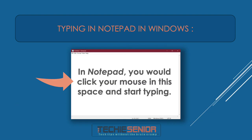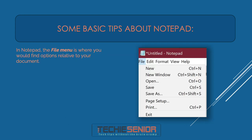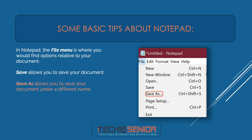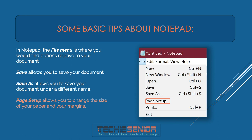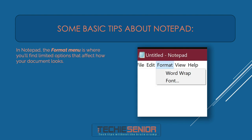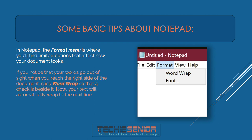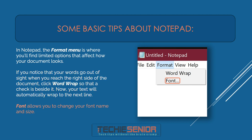In Notepad, click your mouse in the main space and start typing. The File menu is where you find options relative to your document: Save allows you to save your document; Save As allows you to save it under a different name; Page Setup allows you to change the paper size and margins; and Print allows you to print your letter if you have a printer connected. The Format menu offers limited options for how your document looks. If your words go out of sight at the right side, click Word Wrap so a check appears beside it — your text will then automatically wrap to the next line. Font allows you to change your font name and size.